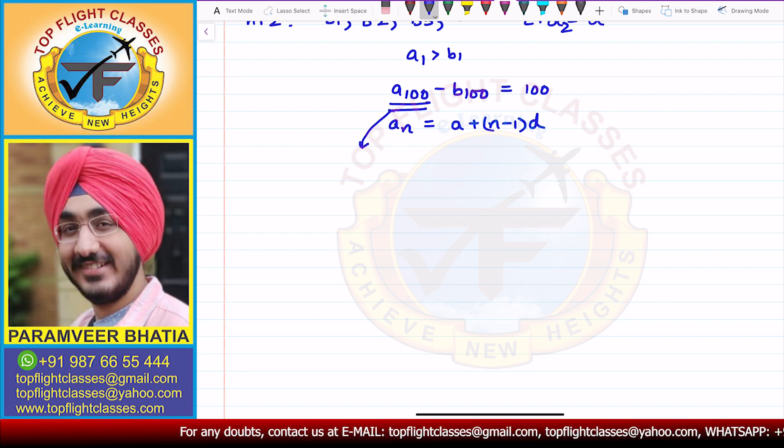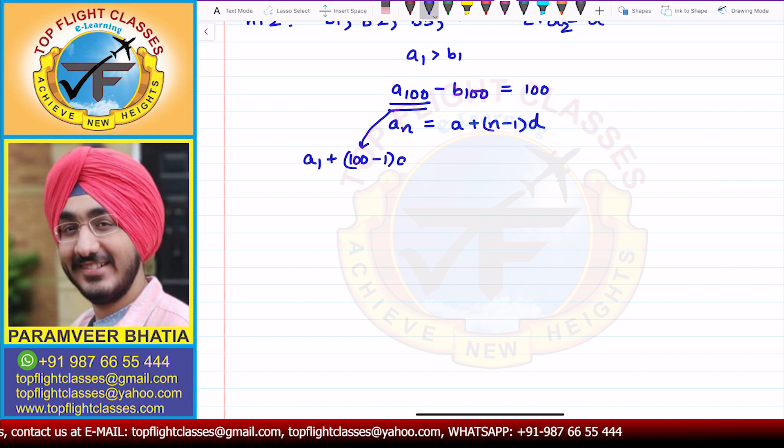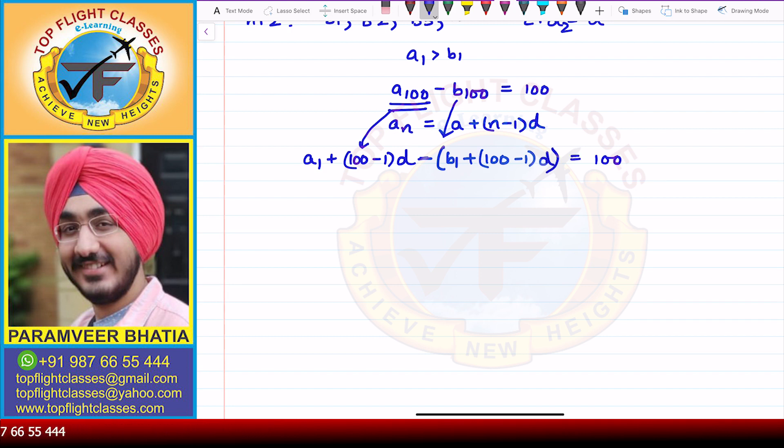I will get that A, in this case is A1, plus (100 minus 1) times the common difference that is D in this case. And if we write B100, then what I will get is minus, the first term is B1, plus again (100 minus 1) times common difference which is again D. And this difference is equal to 100.